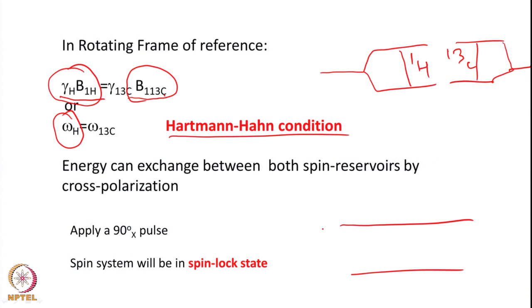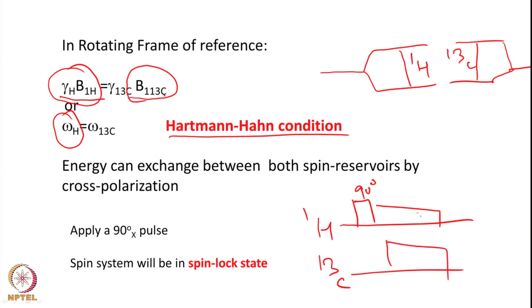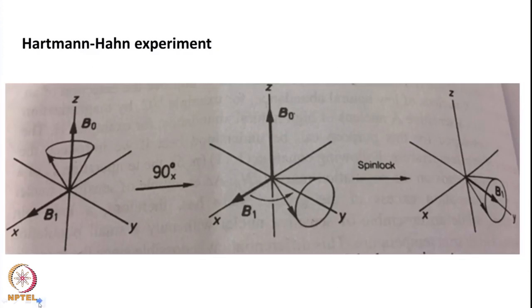How do we carry this out? We apply a 90-degree pulse. We write two channels — one for proton and another for 13C. We apply a 90-degree pulse on proton, then we lock it. We lock proton and carbon simultaneously. We brought the magnetization to the XY plane, locked it, and then detect on X. This is called the cross polarization experiment (CP), which enhances the sensitivity of carbon. This happens in solid state NMR.